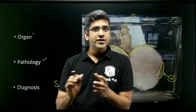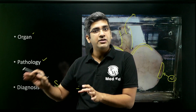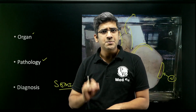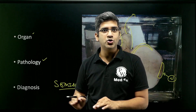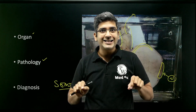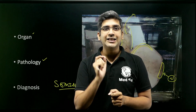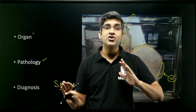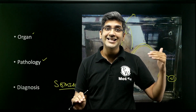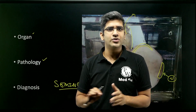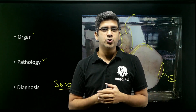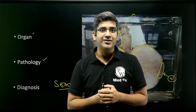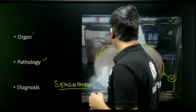Seminoma is the equivalent of dysgerminoma in women. It is the most common primary malignant germ cell tumor. Microscopically, it shows a nested architecture with intervening septa having classical lymphocytes. Seminoma is totally different from spermatocytic seminoma, which happens in elderly patients aged 50–60; seminoma happens in 20–40 year olds. Seminoma is extremely radiosensitive. These are a few points for your viva. Let's go to the next specimen.